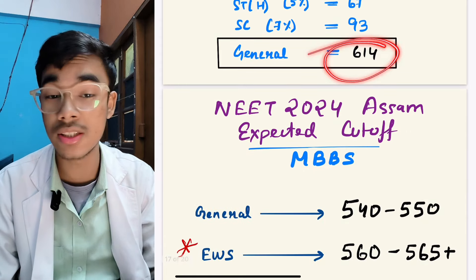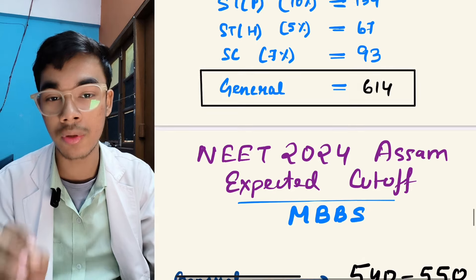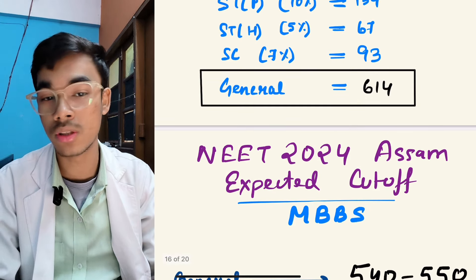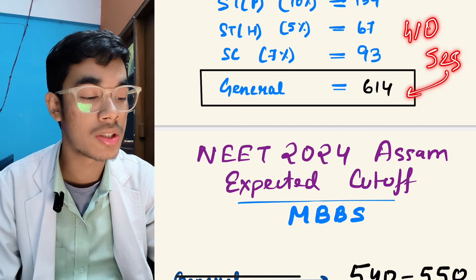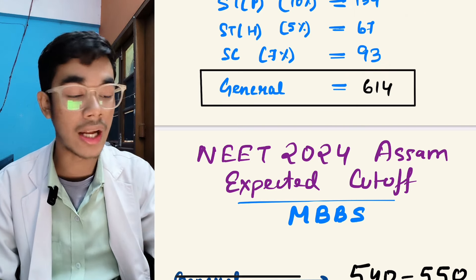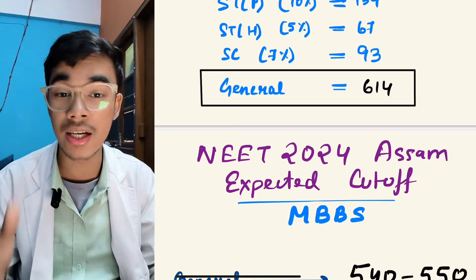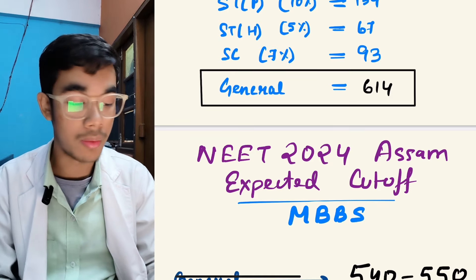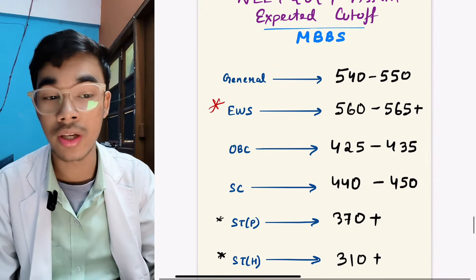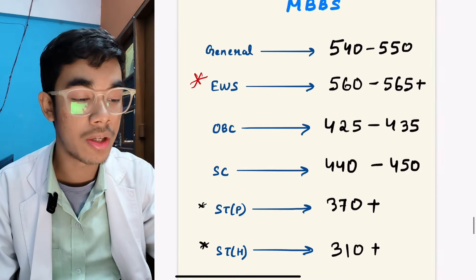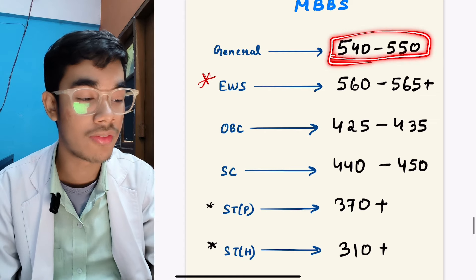This will be a huge number, like it will be relatively cutoff increase. So this will be a cutoff increase in this year. In NEET 2024, the cutoff of this year and last year, you can see it will be 540 and 540.